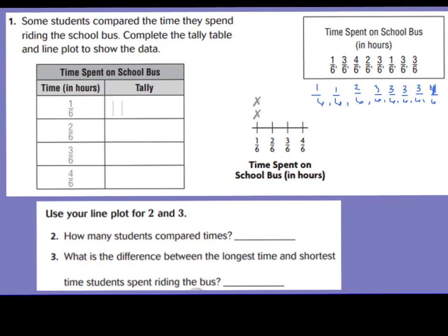Looking at this survey of time spent on a school bus in hours, different kids were asked randomly and their answers were 1, 6, 3, 6, 4, 6, 2, 6, 3, 6, 1, 6, 3, 6, and 3, 6. I don't like it when it's not in order from least to greatest, so I took the time to put them in order from least to greatest. That way, it's easier for me to record on my tally chart.